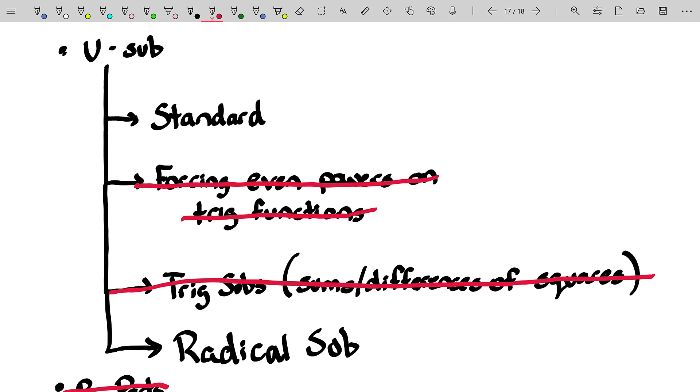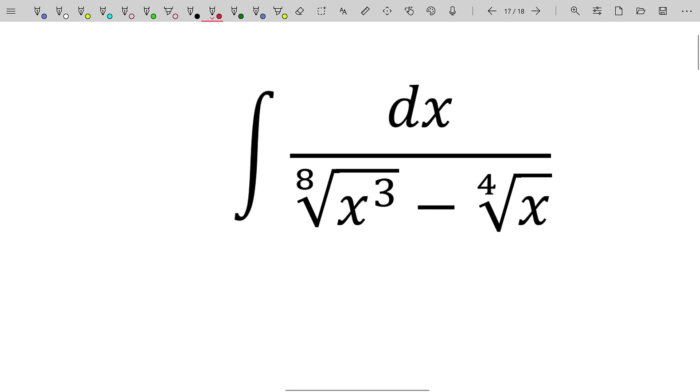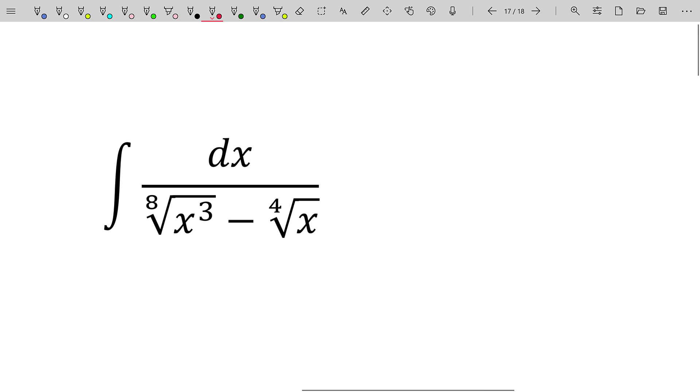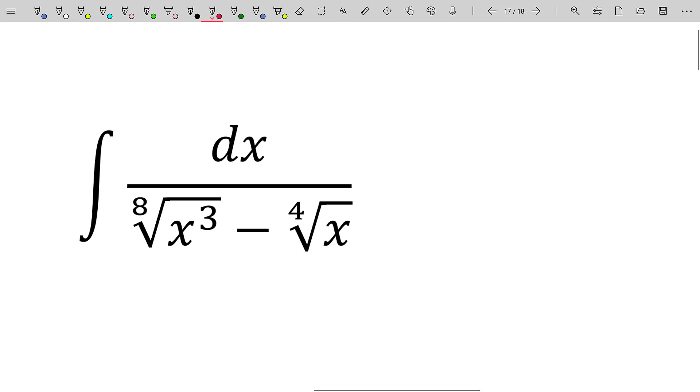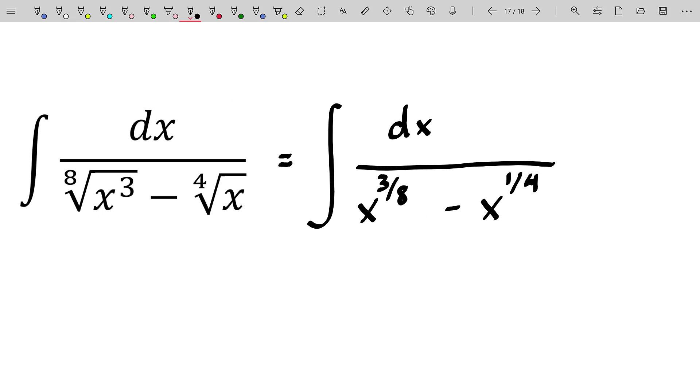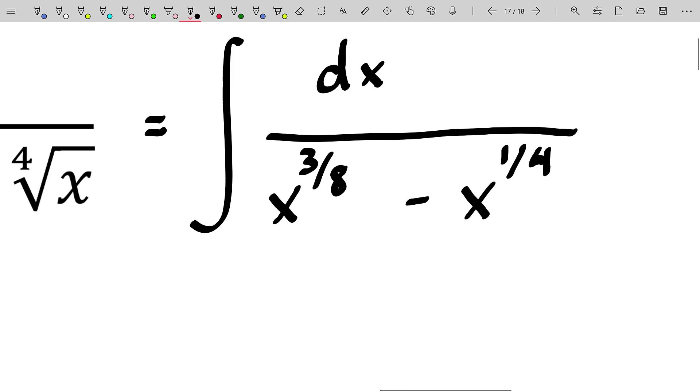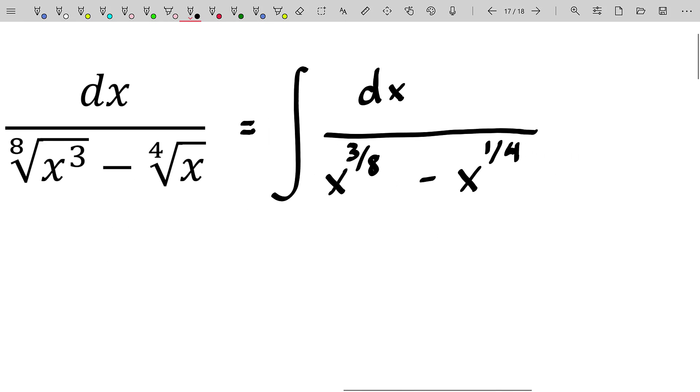A standard u sub or a radical substitution, they're kind of the same. But what is your substitution here? When you're faced with an integral that has a sum or a difference of radical expressions in the denominator, it is often to your benefit to rewrite those expressions in the denominator with rational exponents. So that's what I'm going to do here. As I commonly state, you should do your arithmetic before your algebra, your algebra before your trig, your trig before your precalculus, and your precalculus before your calculus. I want these two exponents to have the same denominator. So I'm going to write that one fourth as a two eighths.